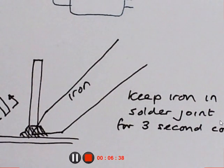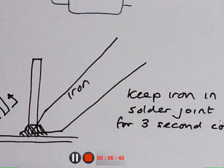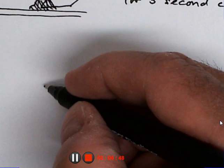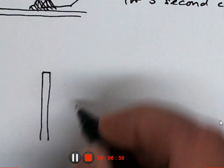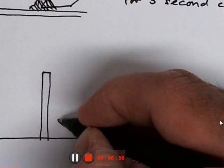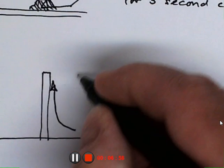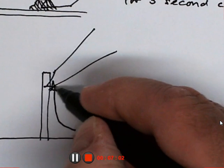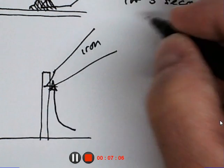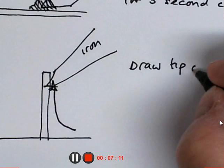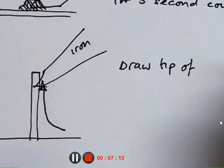So keep the soldering iron into the liquid solder for three seconds, no more no less. And finally I'm going to try and demonstrate this practically in a second. I want you to do this: I want you to draw your soldering iron tip up the leg as you remove it. Draw tip of iron up the leg as you remove it.